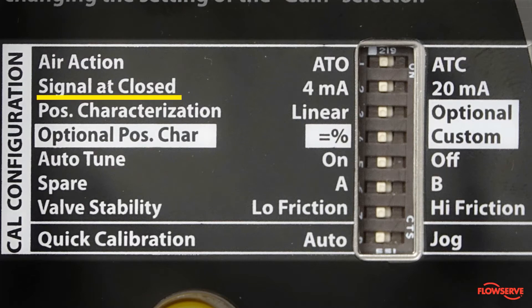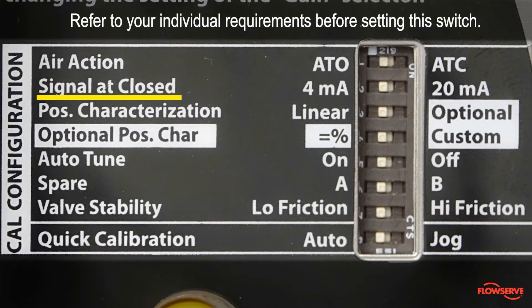The second dip switch is signal at closed. This is used to tell the positioner what signal level drives the valve closed. In the case of an air to open valve, this switch is typically moved to the left to set the signal to 4 mA when closed. Refer to your individual requirements before setting this switch.